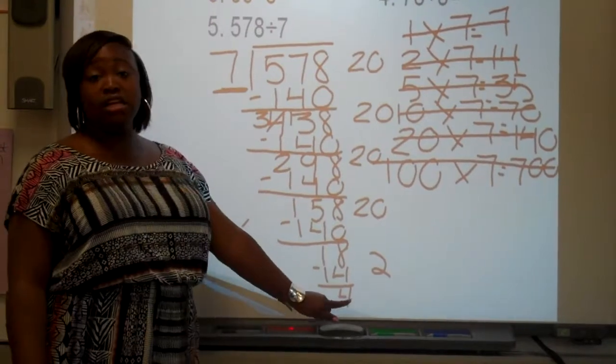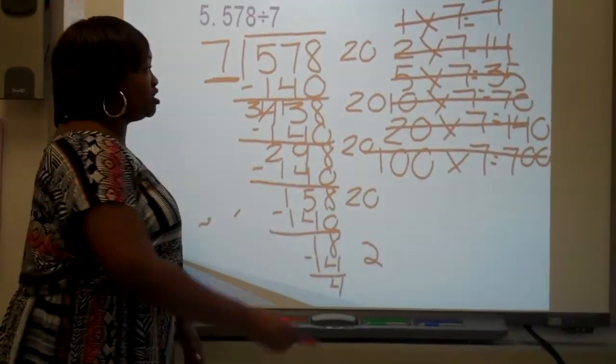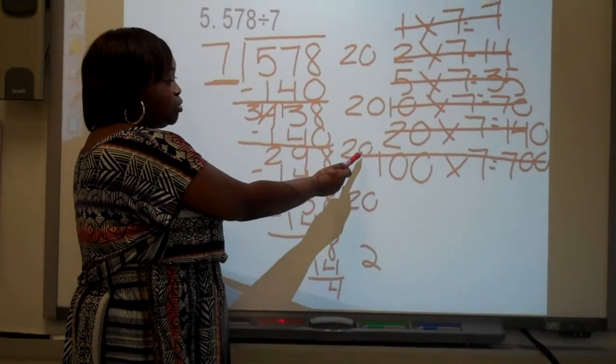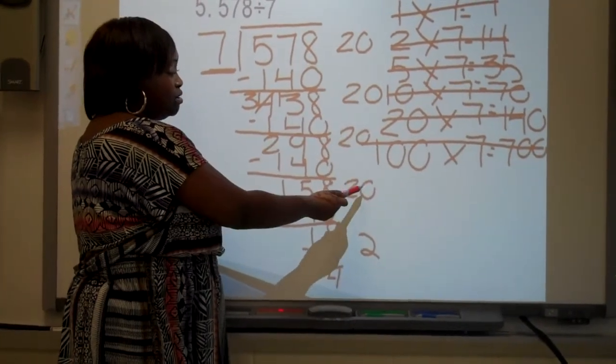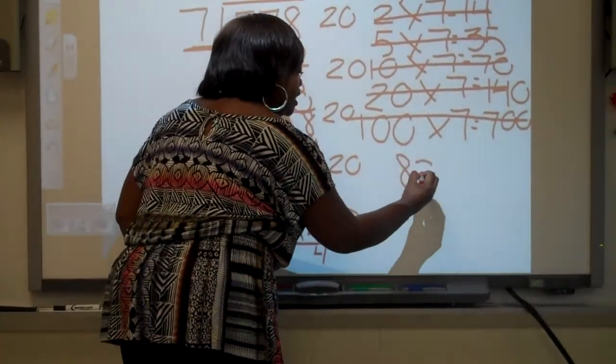So now, since I can't do anything else with this 4, I'm going to add up my tricks. 20 plus 20 is? 40! Plus 20? 60! Plus 20? 80! Plus 2? 82!